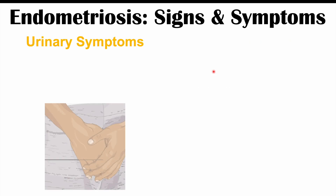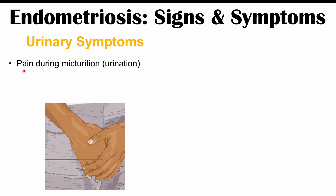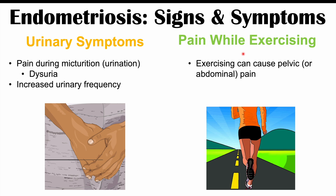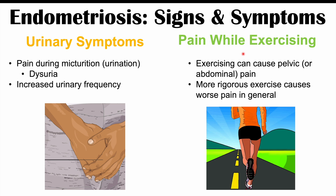Urinary symptoms can also occur, including pain during micturition — urination — which may be described as a burning sensation or dysuria-like symptom. Increased urinary frequency is another potential symptom. Additionally, pain while exercising can occur, causing pelvic and/or abdominal pain. It is often associated with more rigorous exercise, although even mild exercise can elicit pain. Generally, the more rigorous the exercise, the worse the pain, and this can be very debilitating for patients.